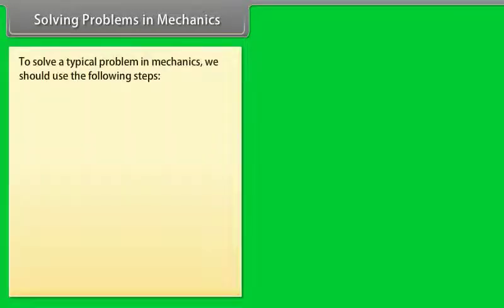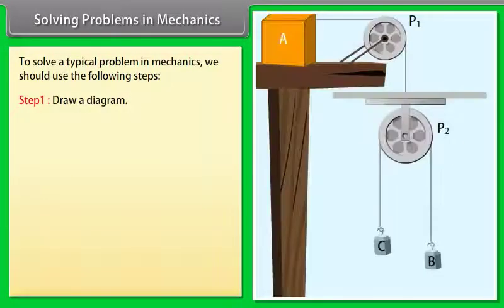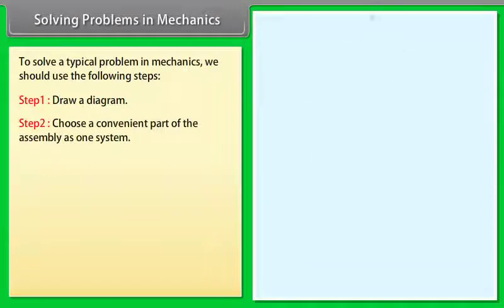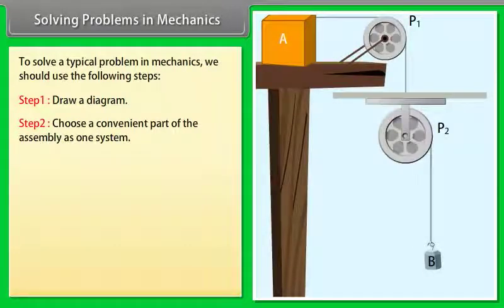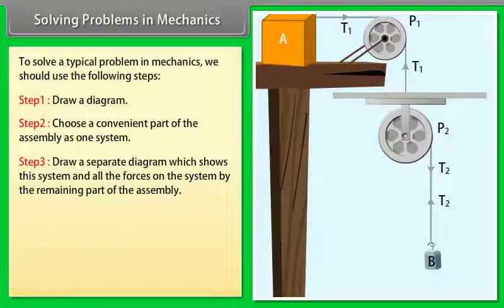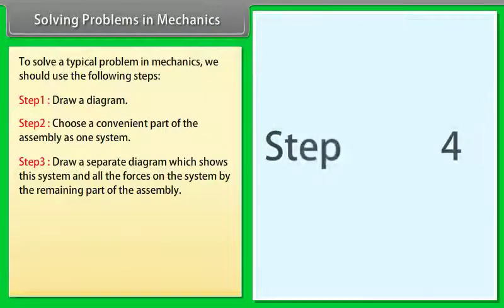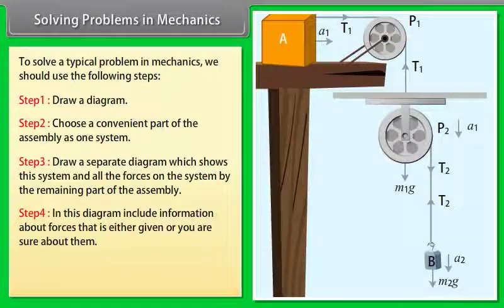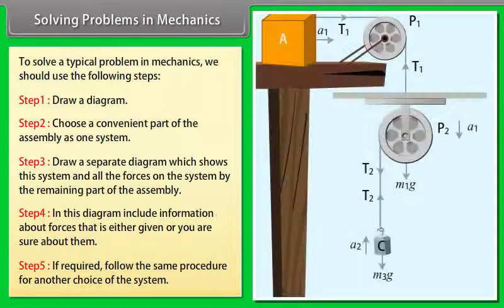Solving Problems in Mechanics: Step 1 — Draw a diagram. Step 2 — Choose a convenient part of the assembly as one system. Step 3 — Draw a separate diagram showing this system and all forces on it by the remaining assembly. Step 4 — Include information about forces that are given or known. Step 5 — If required, follow the same procedure for another choice of system.